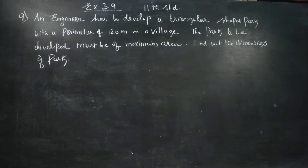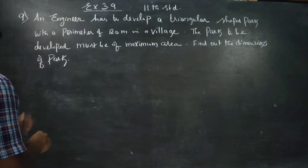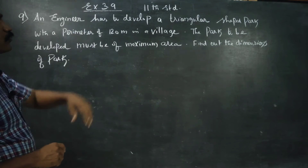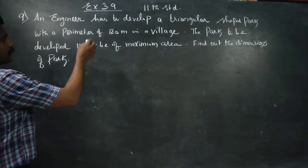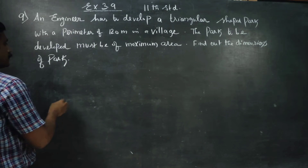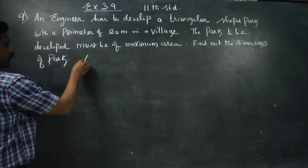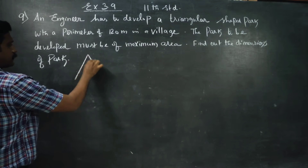Dear Learn Standard Students, in exercise number 3.9, an engineer has to develop a triangular shaped park with a perimeter of 120 meters. It is a triangular park.